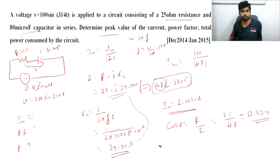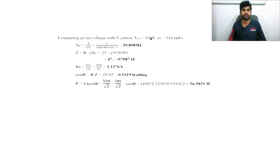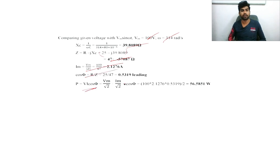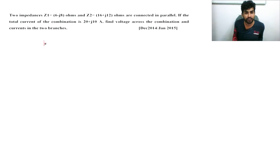Power equals Vrms × Irms × cos φ = (Vm/√2) × (Im/√2) × cos φ = (100/√2) × (2.1212/√2) × 0.539 = 56.58 watts.